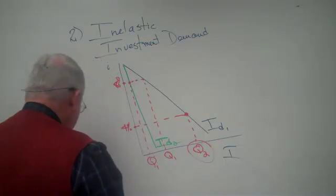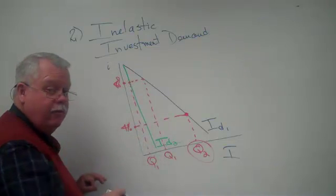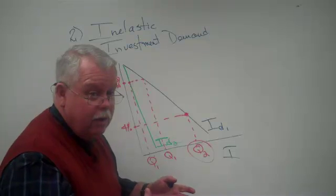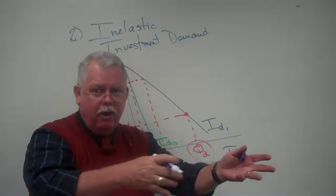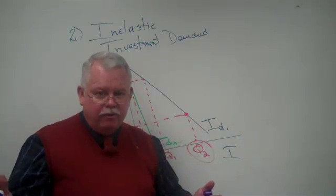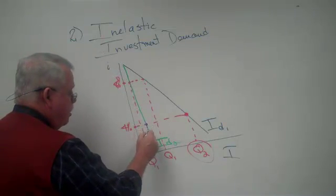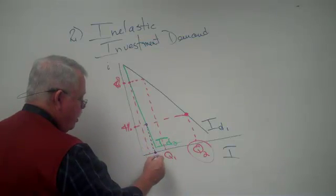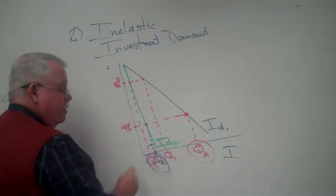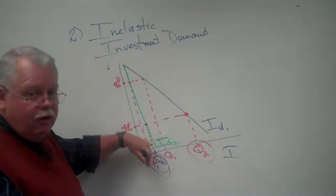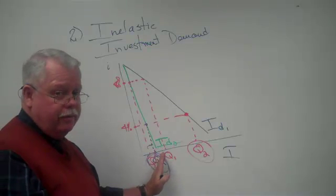But in a depression, businesses are saying, okay, instead of 8%, we can borrow money at 4%. But there's still no business out there. There's still no customers coming in. There's still no guarantee that if we expand our inventory or build new factories, hire new employees, there's still no guarantee we're going to have any customers. So even at that lower interest rate, I'm not going to borrow and spend very much more money. This is my Q2 now. So decreasing the interest rate didn't do much good. That's an inelastic curve.